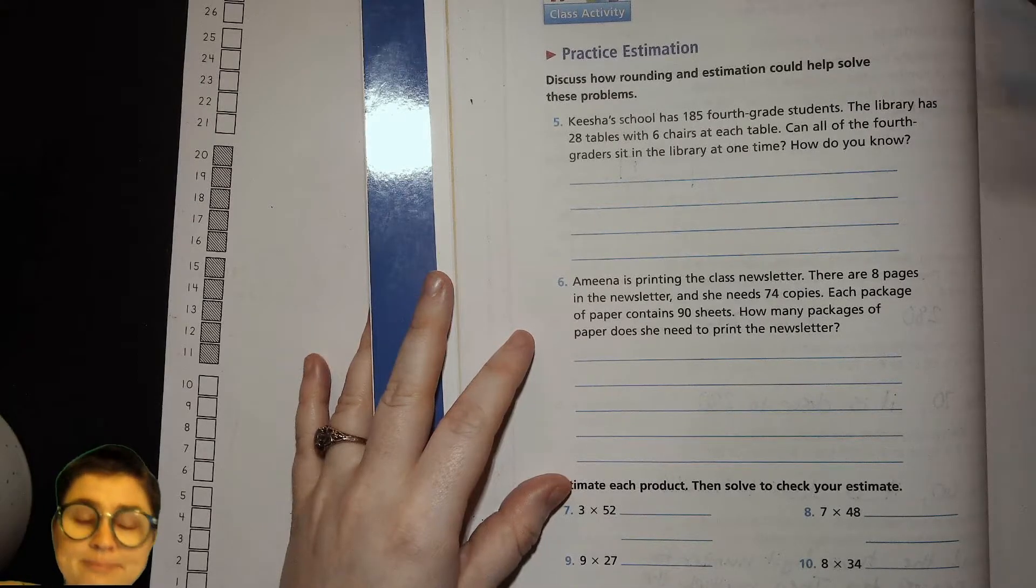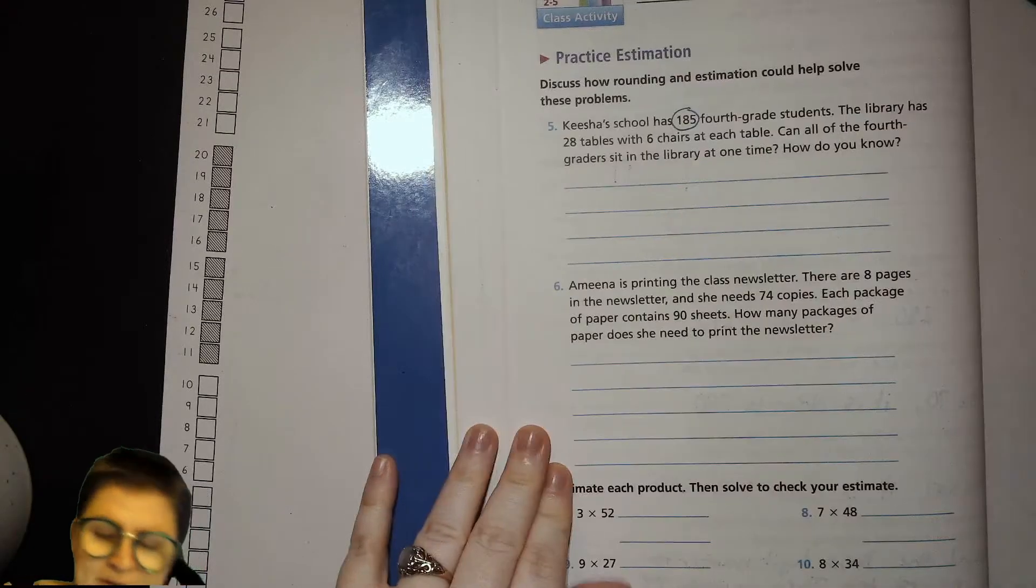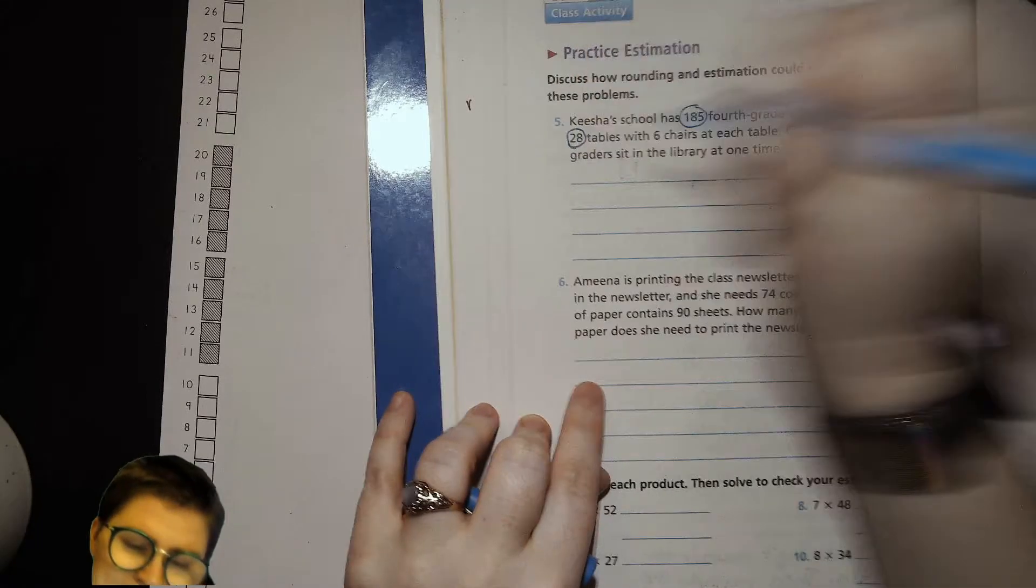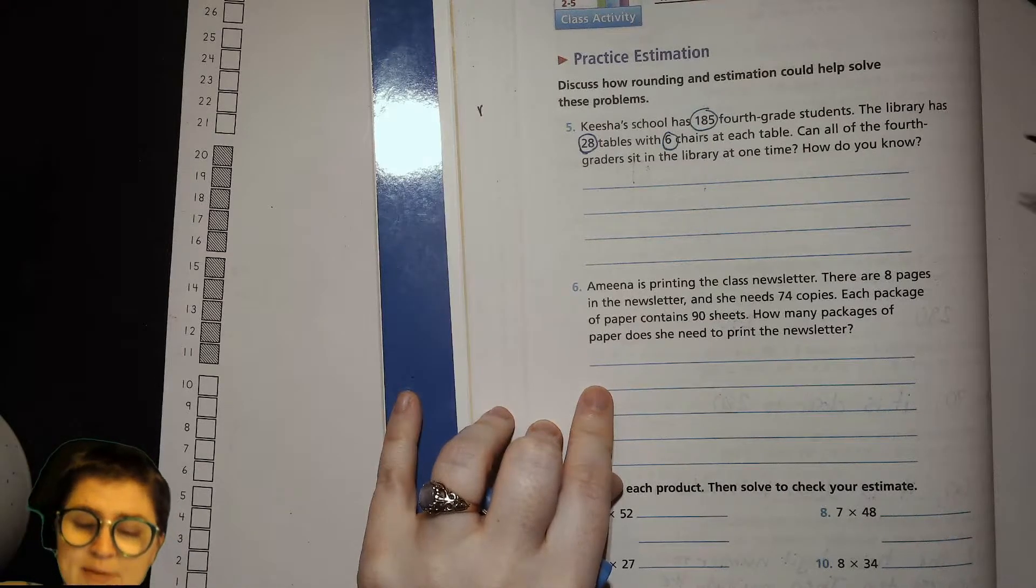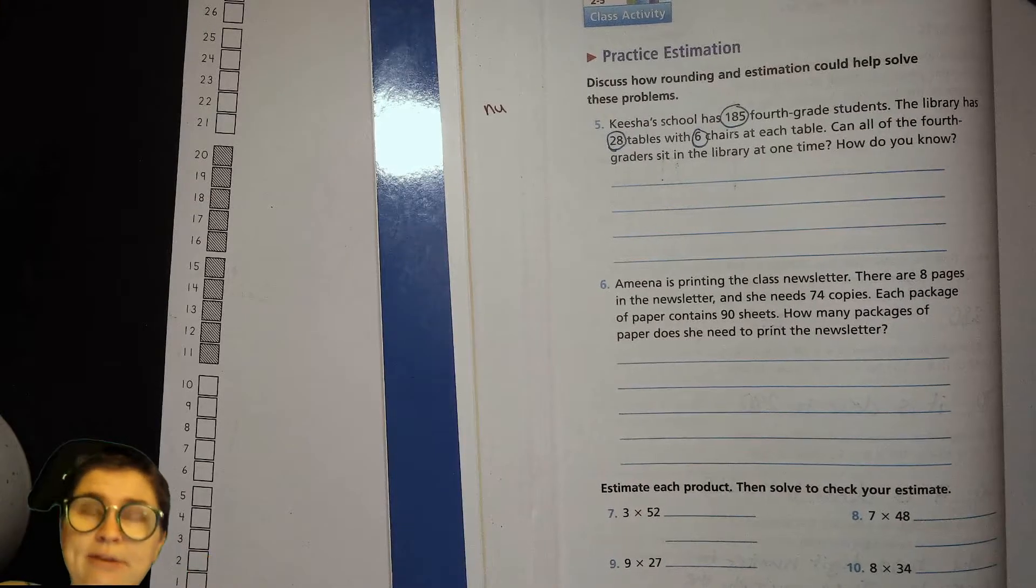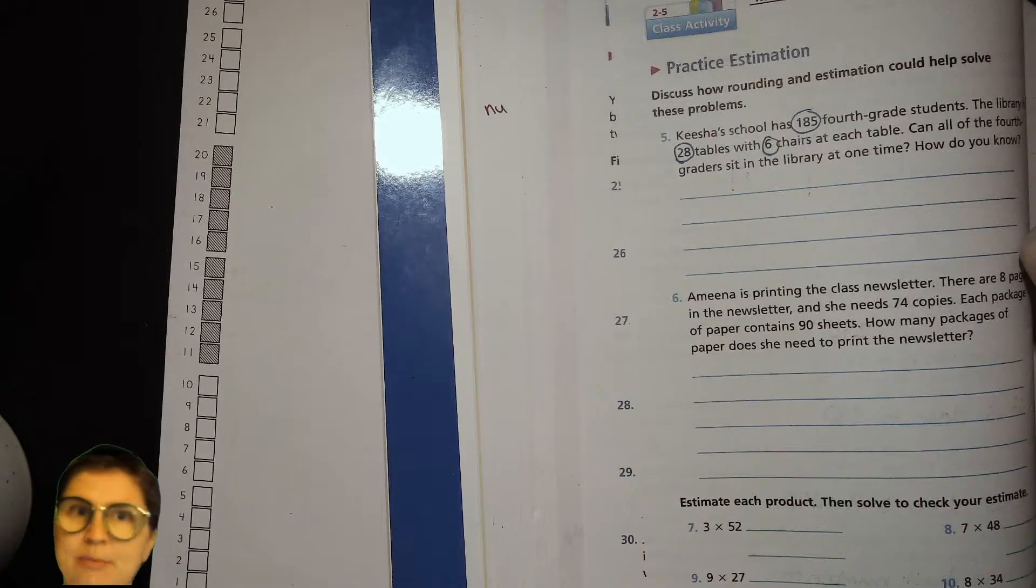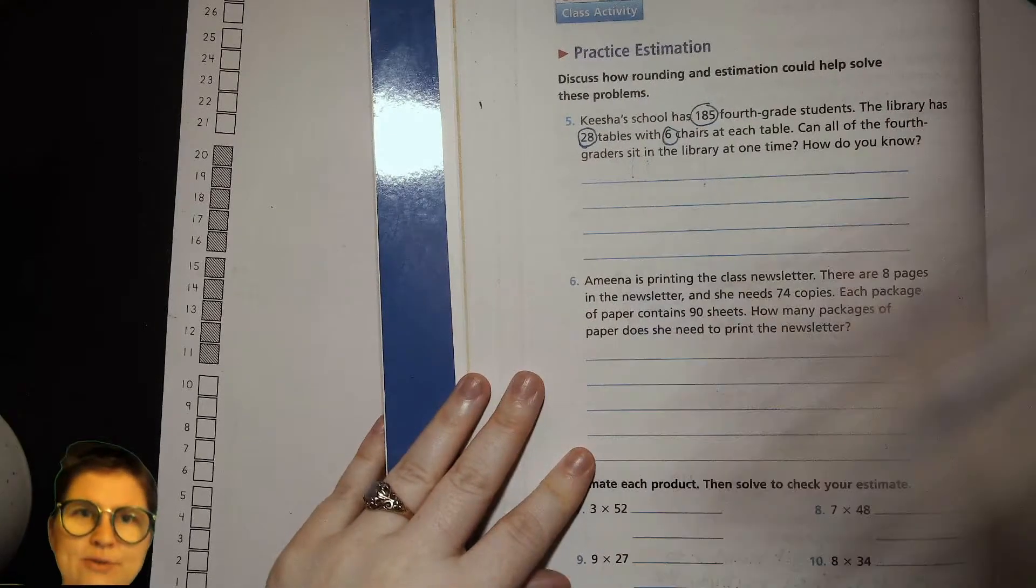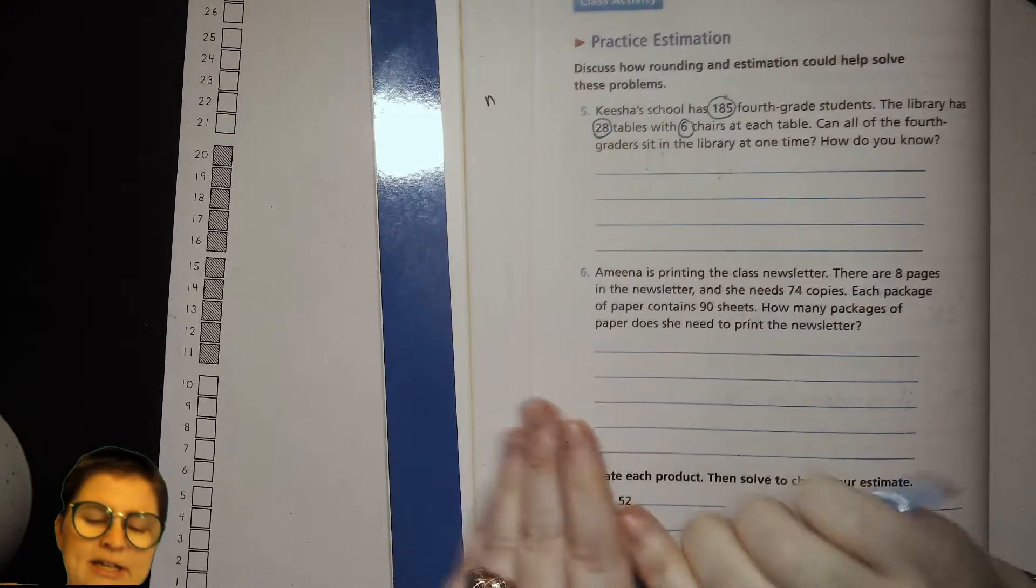Okay, I'll read this one out loud. So Keisha's school has 185 fourth grade students. The library has 28 tables with six chairs at each table. Can all of the fourth graders sit in the library at one time? How do you know? And let me tell you, as a teacher, sometimes we will think about this, you know, like if we got a certain number of classes, we all want to do this thing in the library or in the MPR or something like that. And we think about, like, will everybody fit or should we break it up? And rather than doing the whole math, you can do some quick estimation and figure it out.